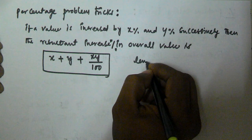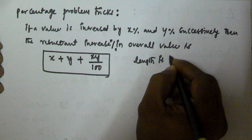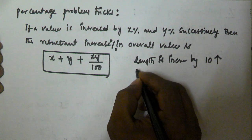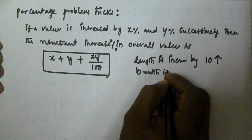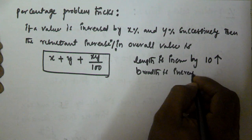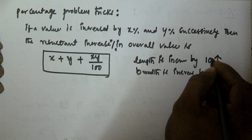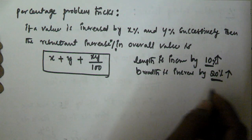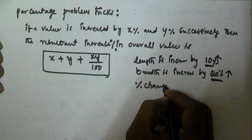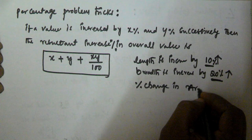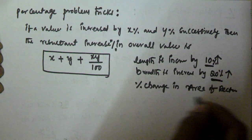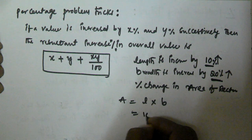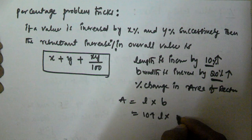For example, a rectangle's length is increased by 10% and breadth is increased by 20%. Then what is the percentage change in area of the rectangle? The area is equal to length into breadth, where length is increased by 10% and breadth is increased by 20%.